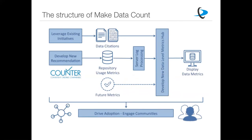Within Make Data Count, we realized data citations were a really important part, but some work had already been done on that in the context of the Research Data Alliance, so we leveraged existing initiatives and incorporated that into the hub. For usage metrics — views and downloads — there wasn't any kind of standard, so we developed a new recommendation together with Project COUNTER so that repositories could feed standardized information about views and downloads into this hub.